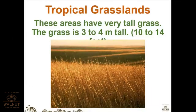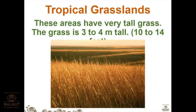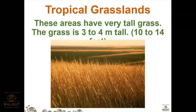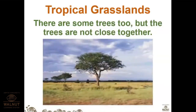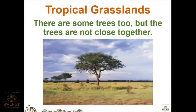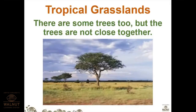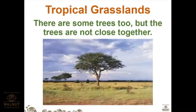These areas have very tall grasses — three to four meters tall, that is 10 to 14 feet. Our height is around four to six feet, so you can imagine how large they are. There are some trees too, but the trees are not close together like in evergreen or deciduous forests — in grasslands trees are spaced apart from each other.